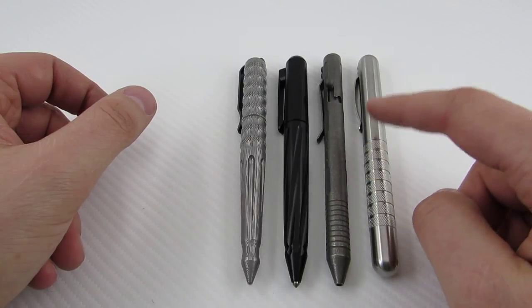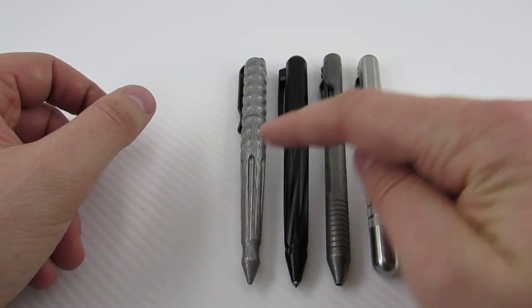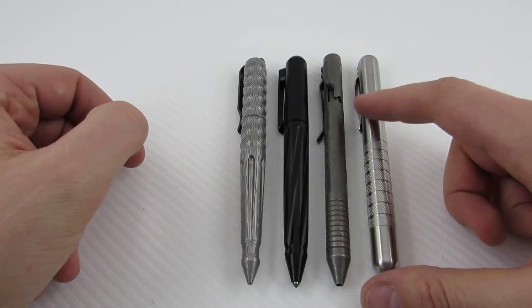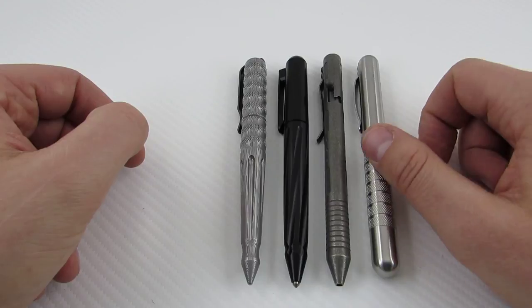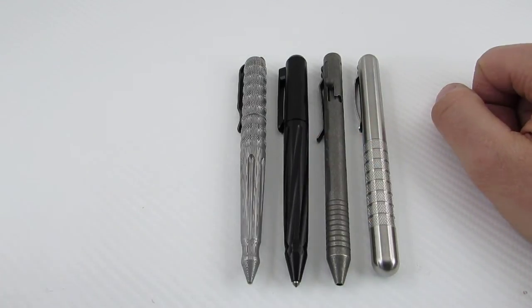Here is a CountyComm Embassy Elite. This one is a threaded cap so you have to unscrew it versus the two that pop off, which is nicer, less work. And then this thing is pretty dang heavy, I don't remember the weight, but it's probably three times as heavy as the ZT here.